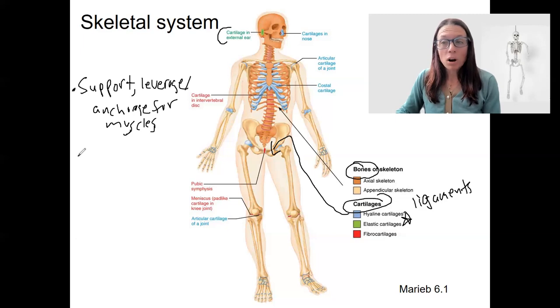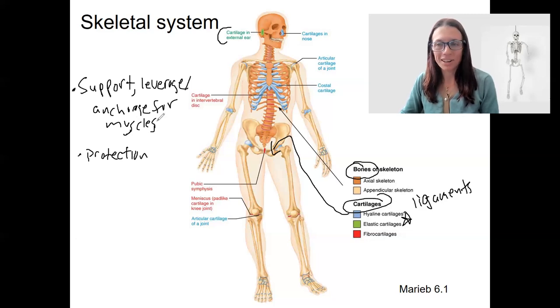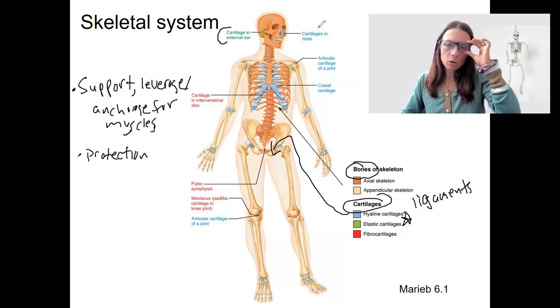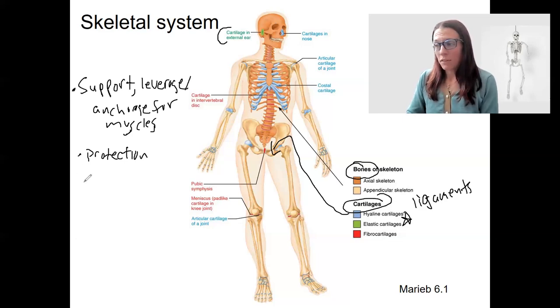Another maybe more obvious one is protection. So the best examples of this is your skull, vertebral column, and rib cage all protect very important things. Your brain, your spinal cord, your heart, your lungs. Your most vital organs are here. So those are kind of the more obvious ones.